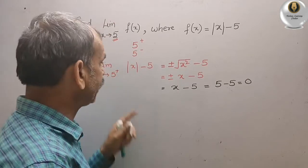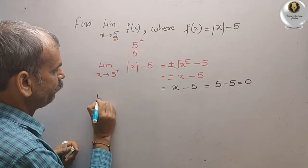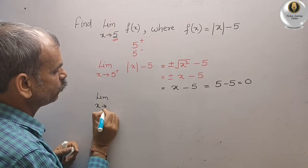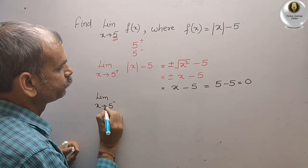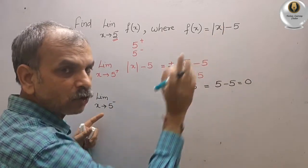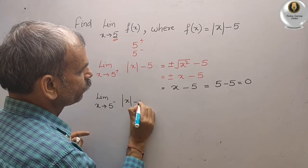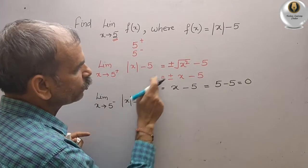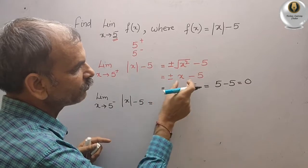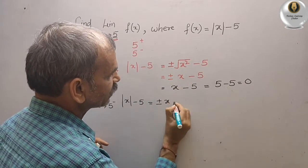Now we will take limit x tends to 5 minus. Limit x tends to 5 minus. Again there is no condition, that means we have to take this only. So we will take this only. That is equal to, we know that, this is equal to this, plus and minus x minus 5.